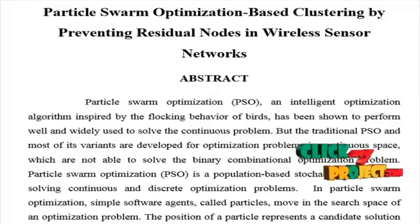Each particle searches for better positions in the search space by changing its velocity according to rules originally inspired by behavioral models of bird flocking. Particle swarm optimization belongs to the class of swarm intelligent techniques that are used to solve optimization problems.